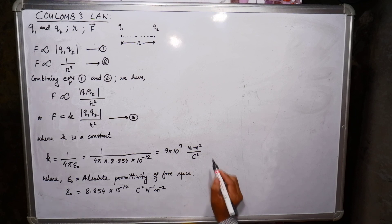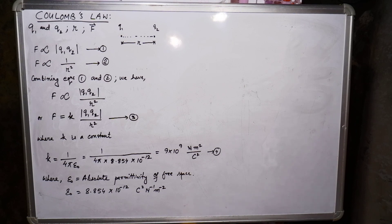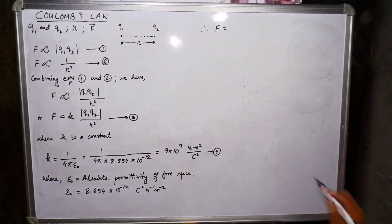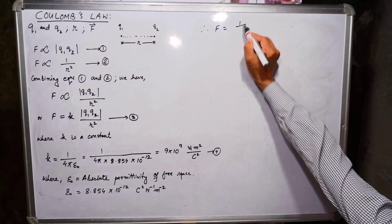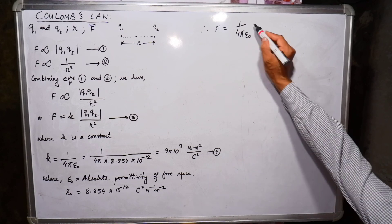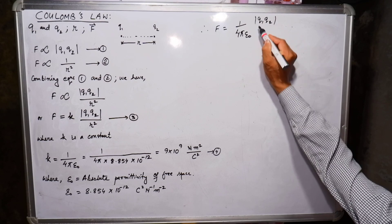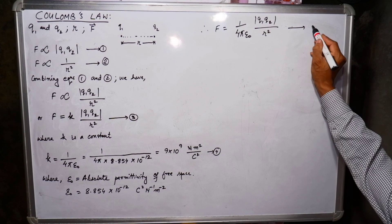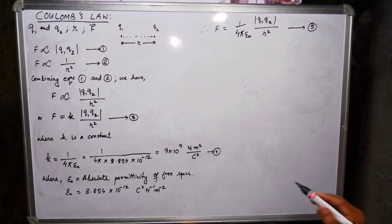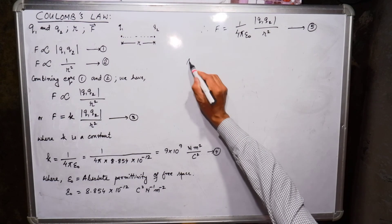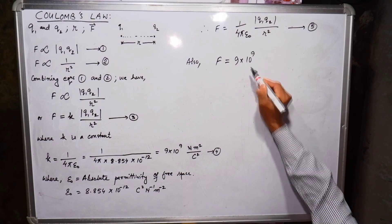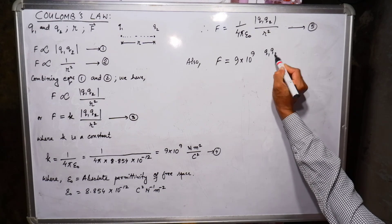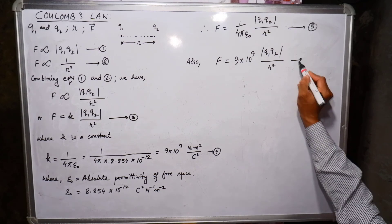Substituting the value of k from equation 4 into equation 3, we get F = (1/(4π·ε₀)) · q1·q2/R², named as equation number 5. We can also write this as F = 9 × 10⁹ · q1·q2/R², named as equation number 6.